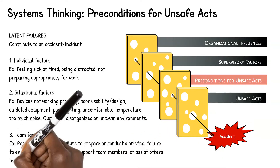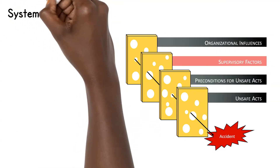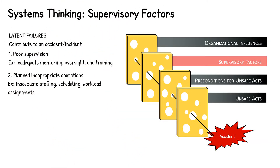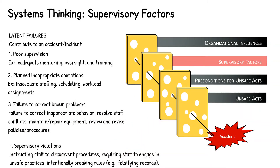Team factors involve instances where team members fail to coordinate and communicate effectively. The third tier, supervisory factors, focuses on actions and decisions at the supervisory level of an organization that can adversely affect performance and the overall safety and efficiency of a system. Issues at this tier can involve poor supervision like inadequate training, planned and appropriate operations such as inadequate staffing or improper workload requirements, failure to correct known problems like inappropriate behavior or staff conflicts, and supervisory violations such as instructing staff to cut corners or falsify records.